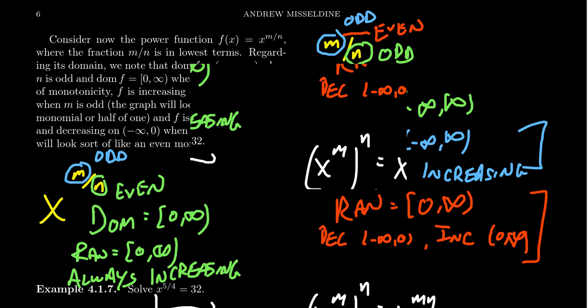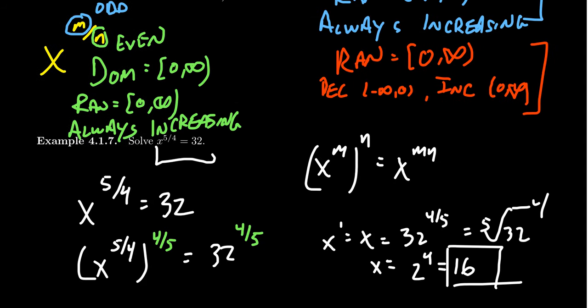We didn't have that issue with odd numerators. With an even denominator there's no issue with two solutions, but there is one important exception: if you had x to the five-fourths equals negative 32, there's no solution, because the range of that function is zero to infinity. If your denominator is even, the right-hand side must be positive, otherwise there's no solution. Summary: if your numerator is even, you'll get two solutions that could be non-real; if your denominator is even, the right-hand side must be positive.